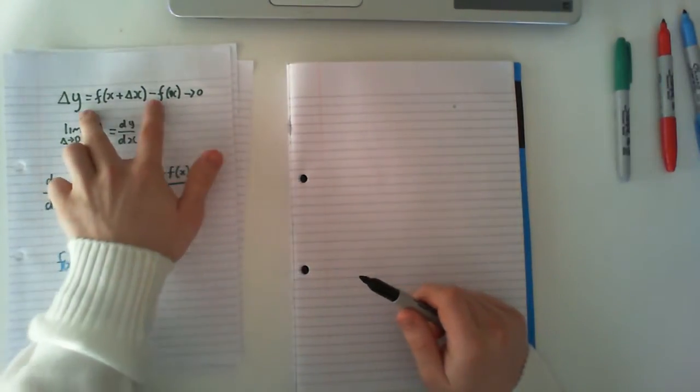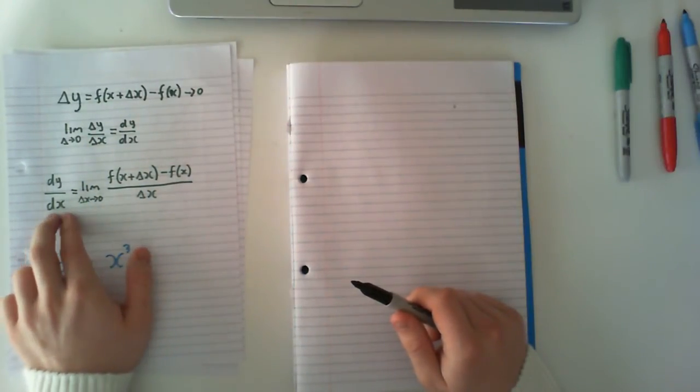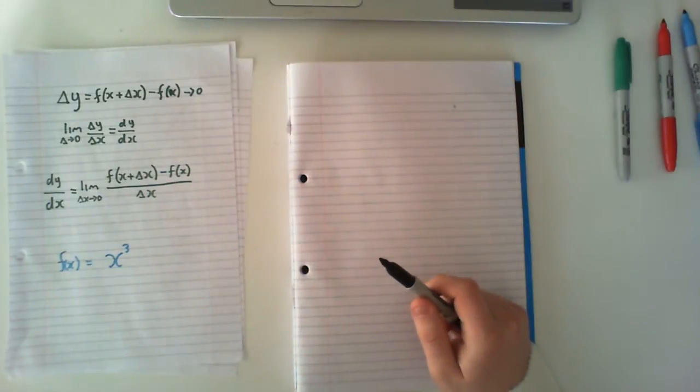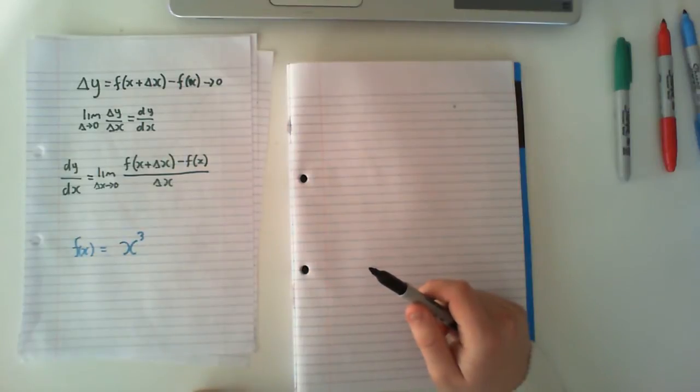We can see we take a delta y on top, take our limit of delta x goes to zero, our delta x on the bottom being delta x, and we get this term here. Looks a bit confusing to start with, but I'm going to go through an example and show that this does actually work.